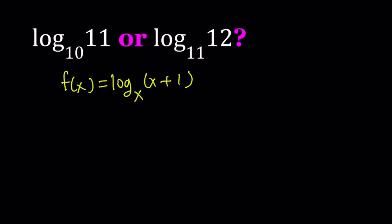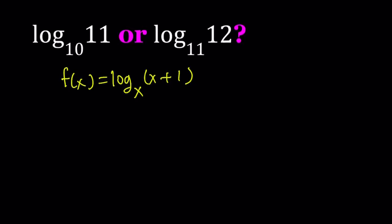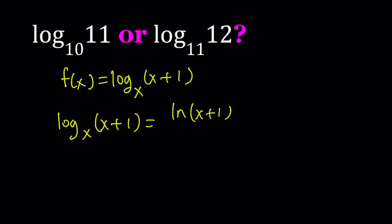First of all, I want to find out if this function is increasing or decreasing, or if there is any maxima or minima. I want to put it in a nicer form because the base is a variable — it's log, not the natural log like ln. So let's go ahead and use the change of base formula to write this as ln(x+1) divided by ln(x), and let's call this f(x).